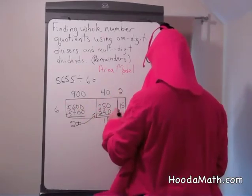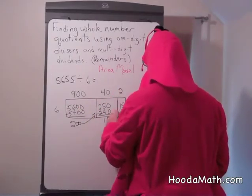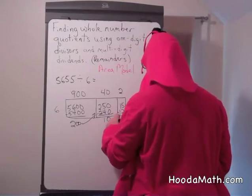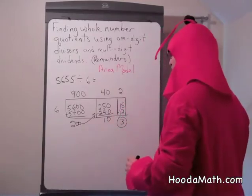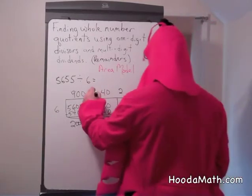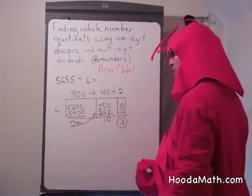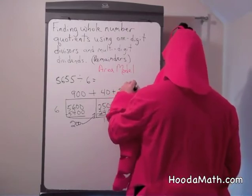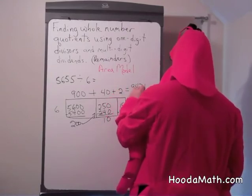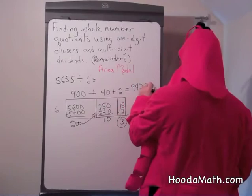2 times 6 is 12 and we have a remainder of 3. So we add our partial quotients and it says 942 with a remainder of 3.